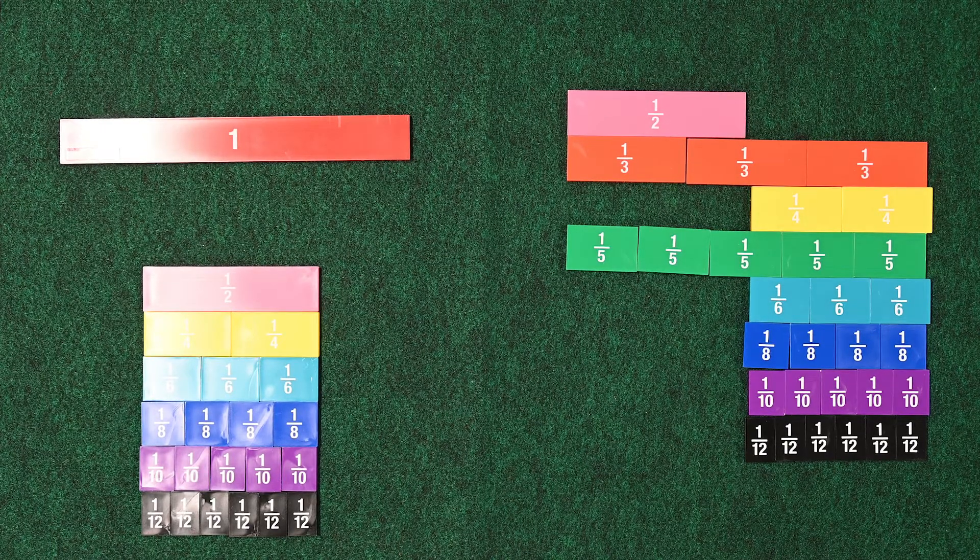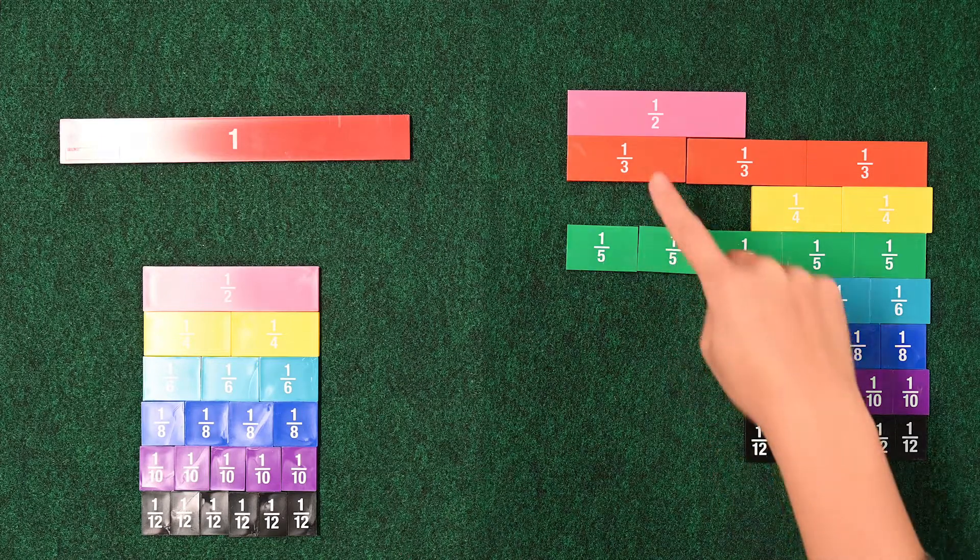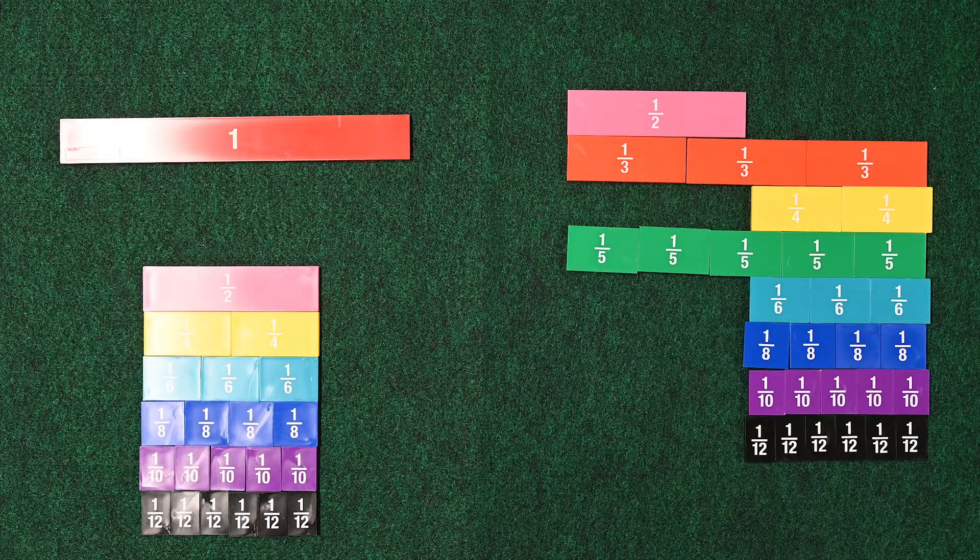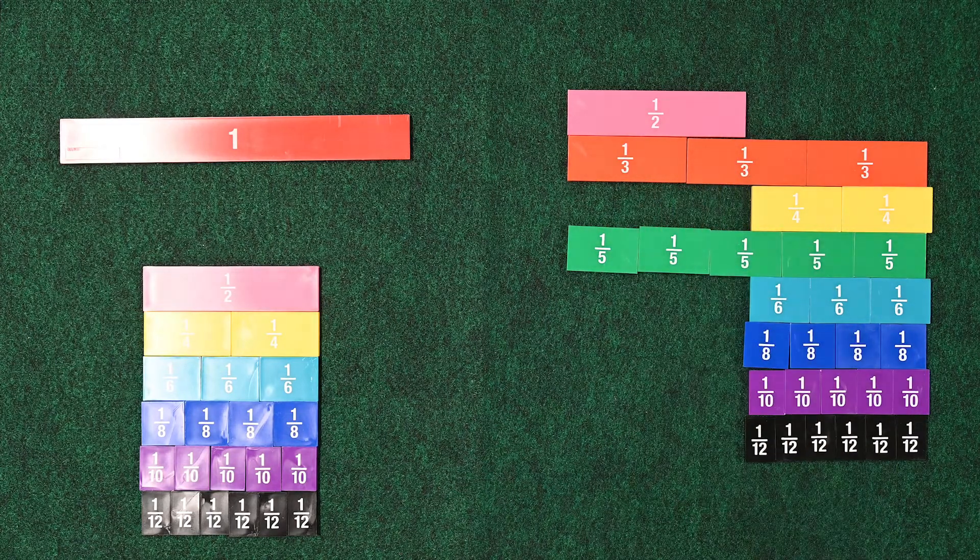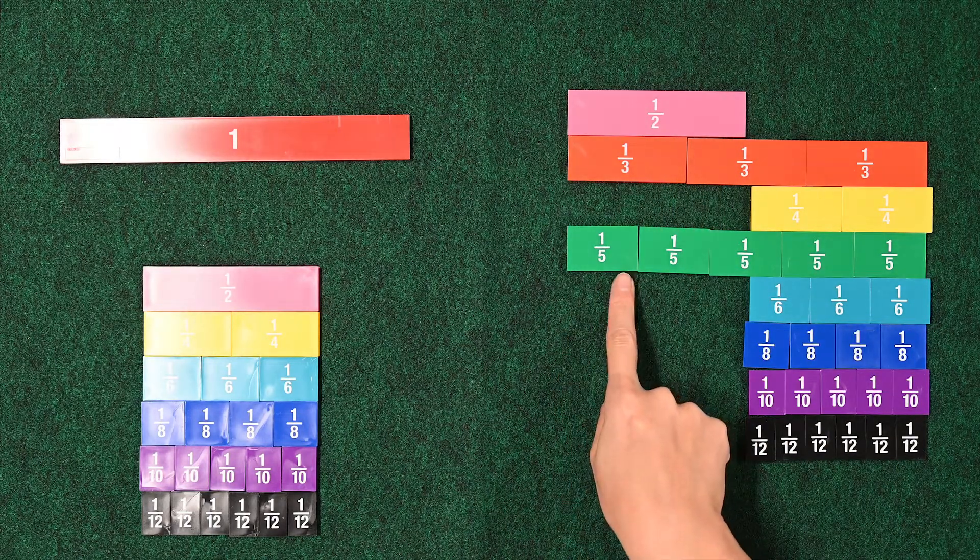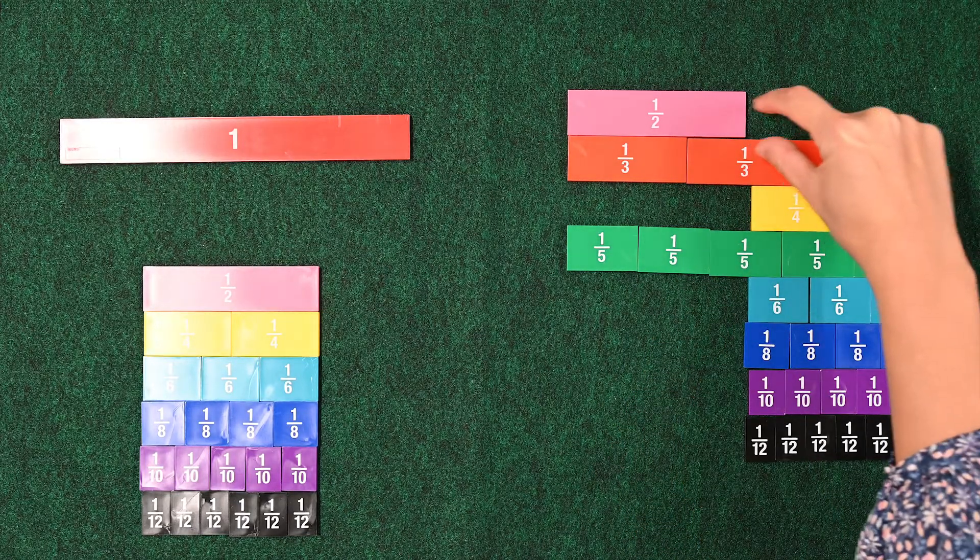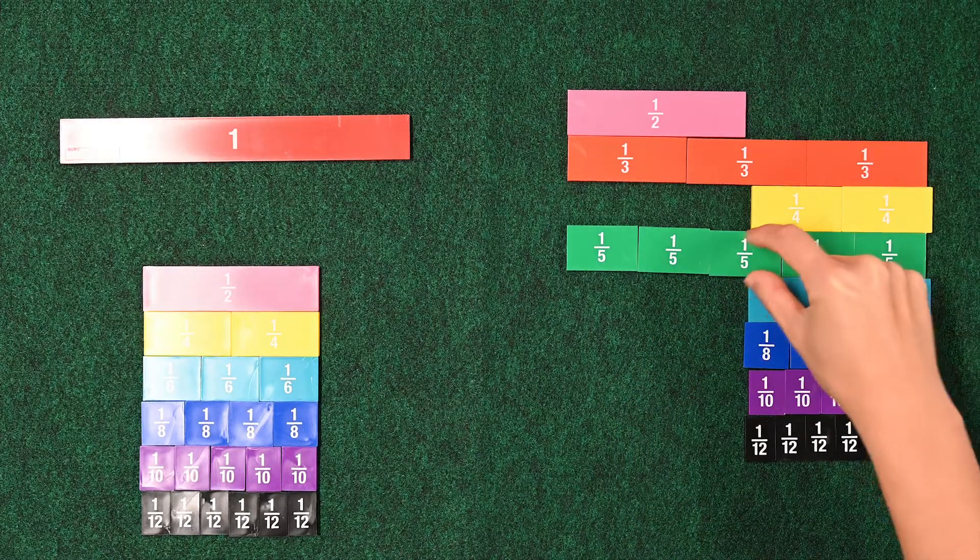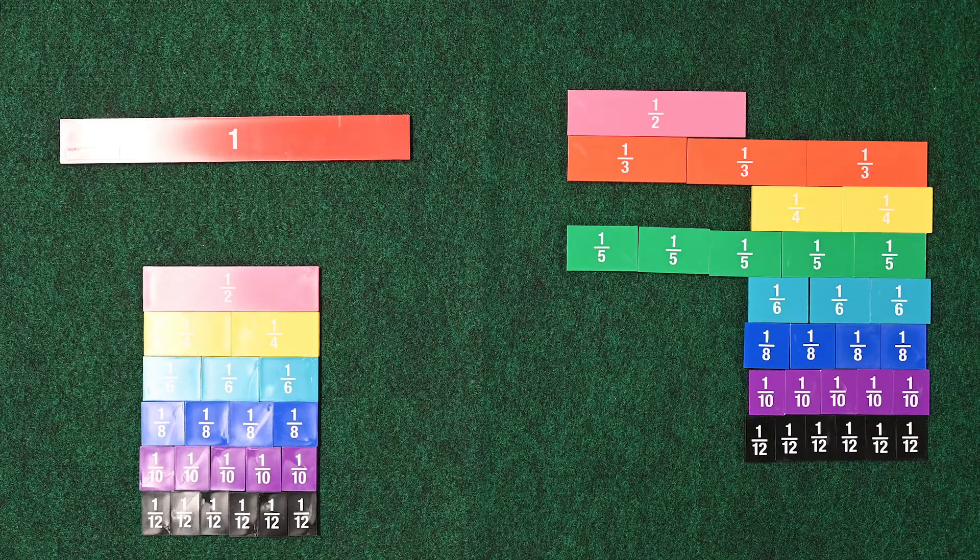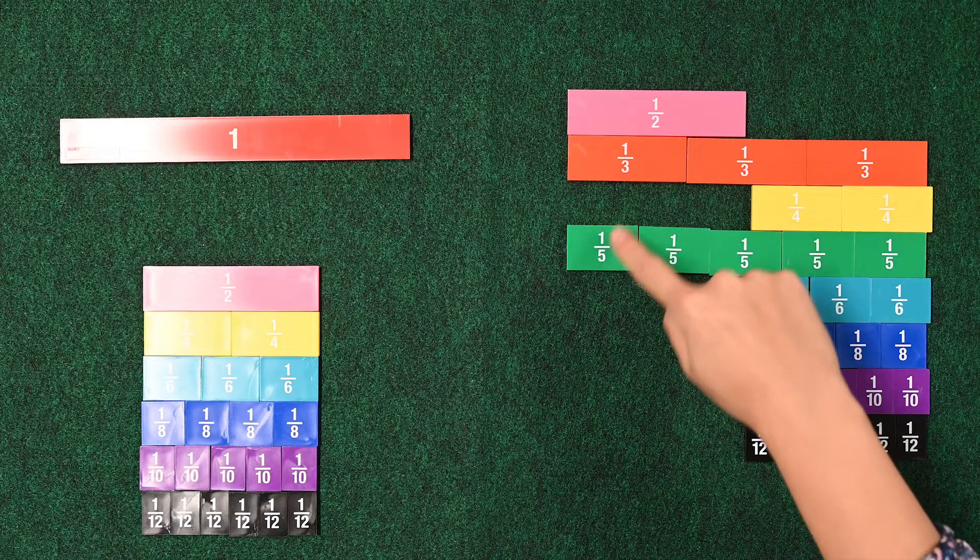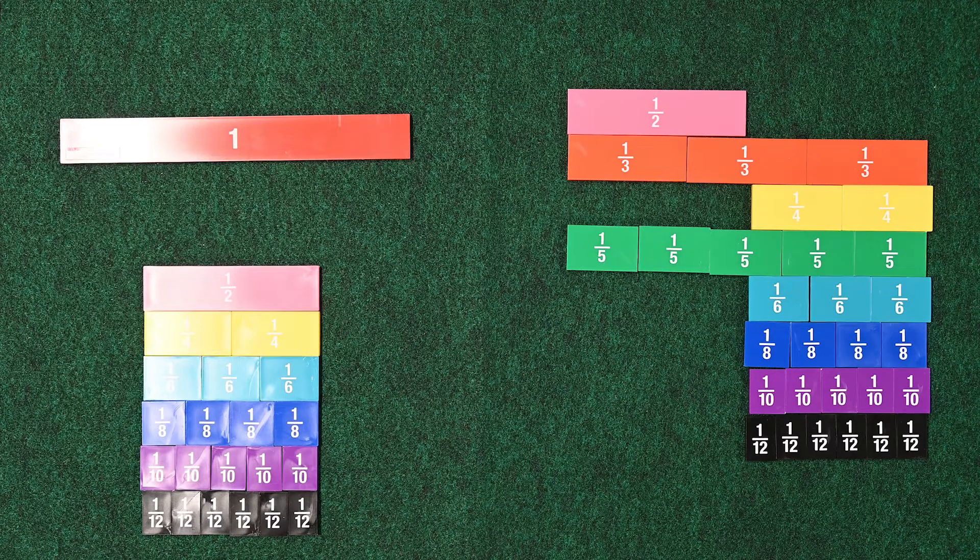You notice we didn't use the 1 3rd and the 1 5th. If I took 1 3rd, it would be too small. If I took 2 3rds, it would be too big. If I took 1 5th or 2 5ths, it would be too small. If I took another 5th, it would be too big. Notice that 3 and 5 are both odd numbers. And there's not an integer that makes half of 3 or half of 5.